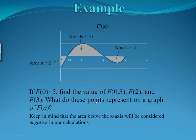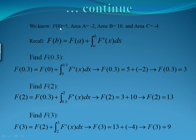What if we have something that's not linear? Generally, if you have something that's more curved or parabolic, the areas will be given to you. In this example, area A has an area of 2, area B of 10, area C of 4. Remember, anything below we're going to have to count as negative. So if f of 0 equals 5, we want to find the values of f of 0.3 — our first intersection point — f of 2, our second intersection point, and f of 3. This is the graph of f prime of x. Recall, f of b equals f of a plus the integral from a to b of f prime of x dx.